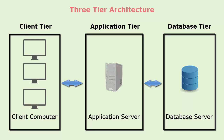Three tier architecture. A three tier application is also known as a web-based application. Three tier architecture is divided into three parts: presentation layer, application layer, and database layer. The client system handles the presentation layer, the application server handles the application layer, and the server system handles the database layer.